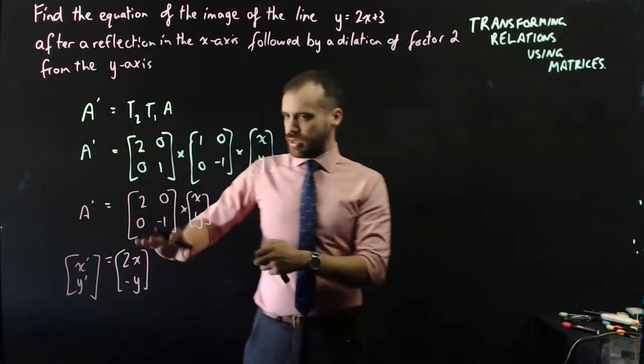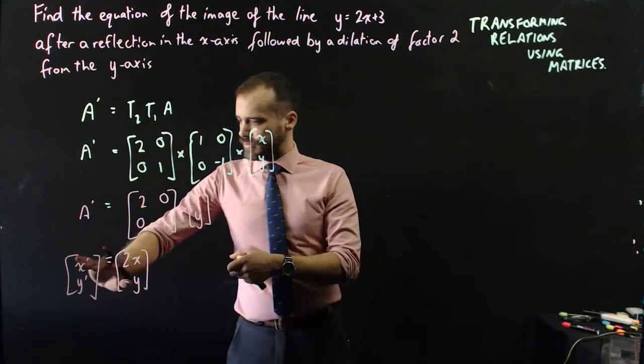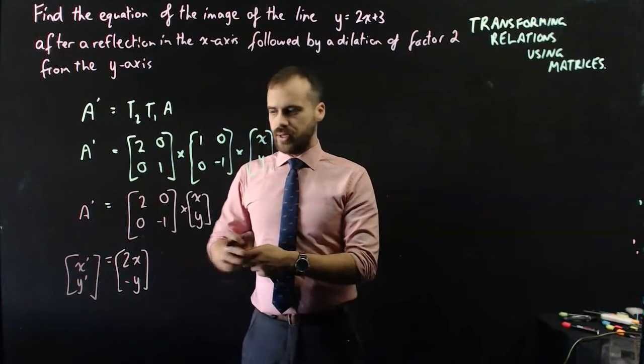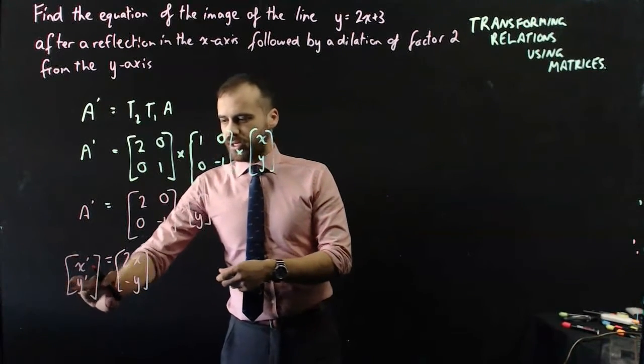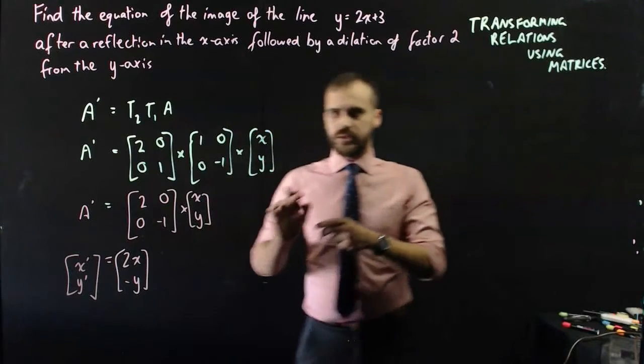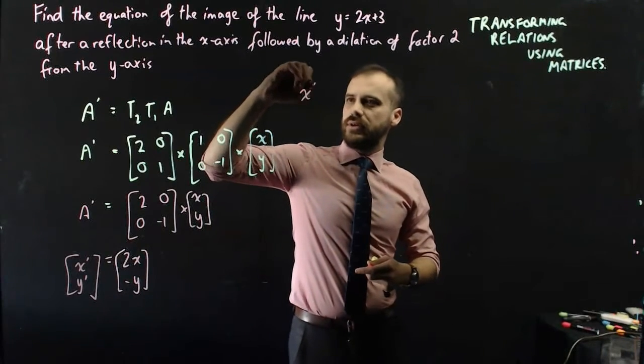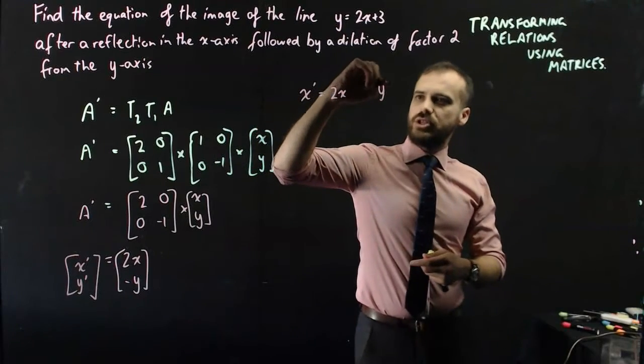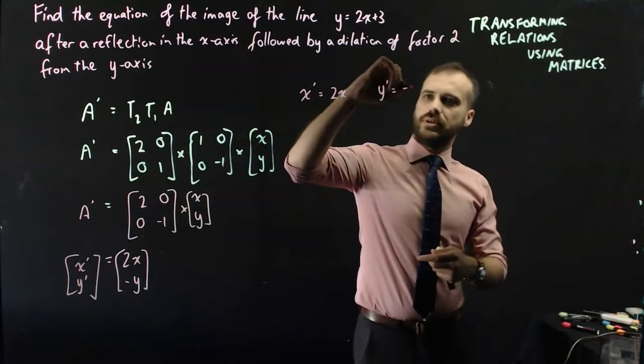So what am I saying? I'm saying that the image of x is equal to 2x and the image of y is equal to negative y. Let's just write those two down. The image of x is equal to 2x and the image of y is equal to negative y.